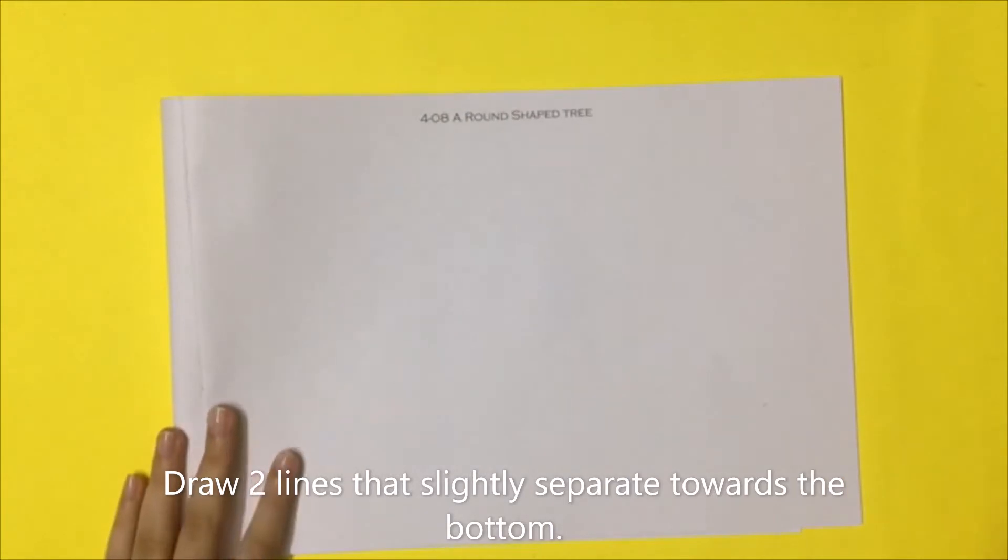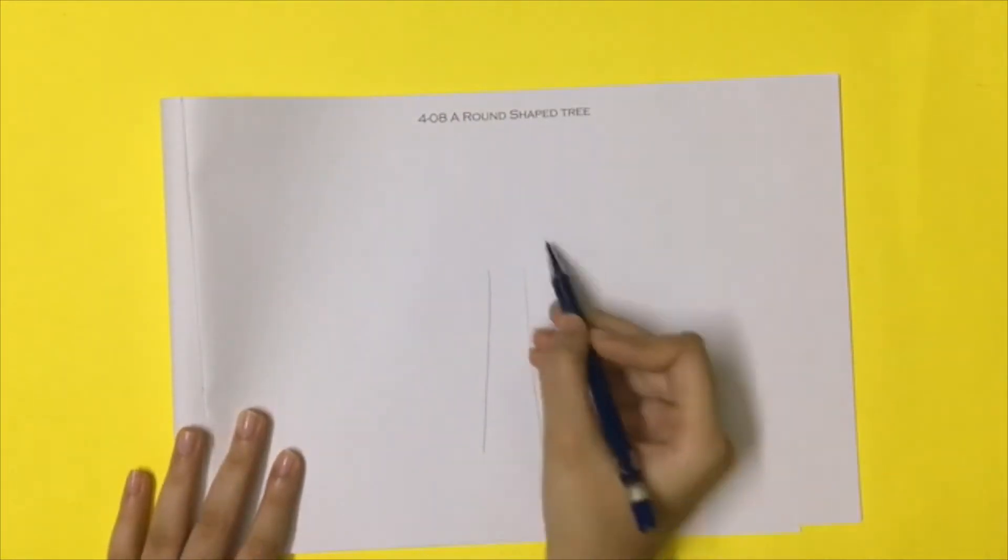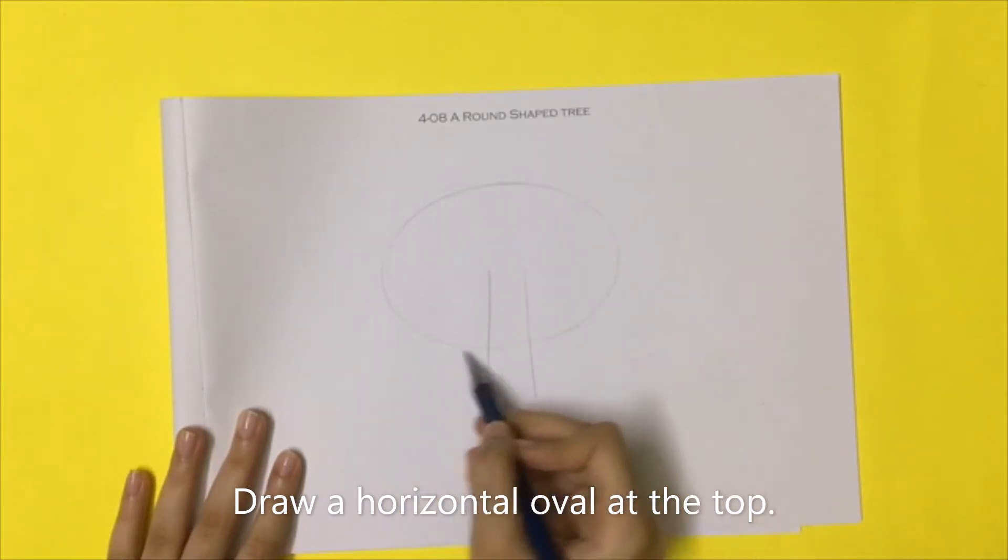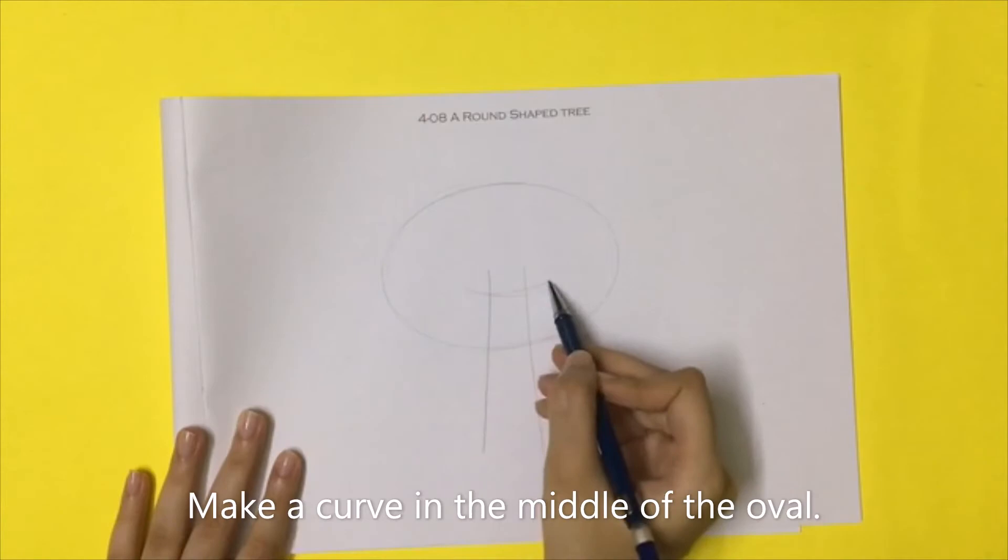Draw two lines that slightly separate towards the bottom. Draw a horizontal oval at the top. Make a curve in the middle of the oval.